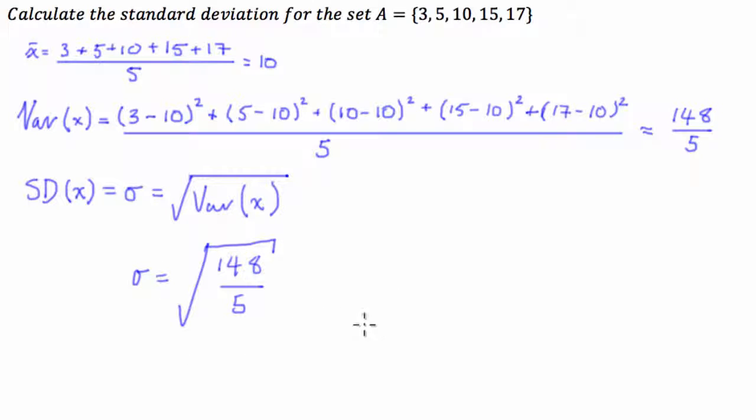Now, this might be enough if you're working fully without a calculator, but for those people who have a scientific calculator or a calculator which is able to do that kind of maths, the square root of 148 over 5 is equal to approximately 5.44.